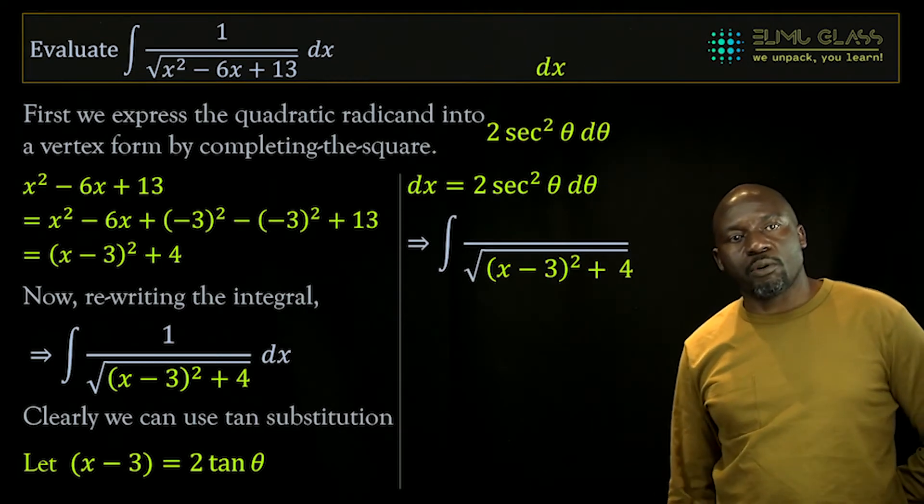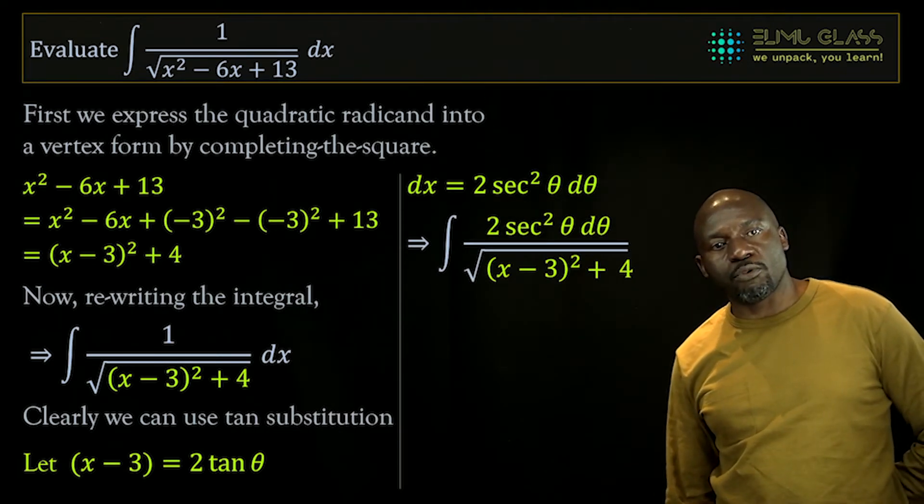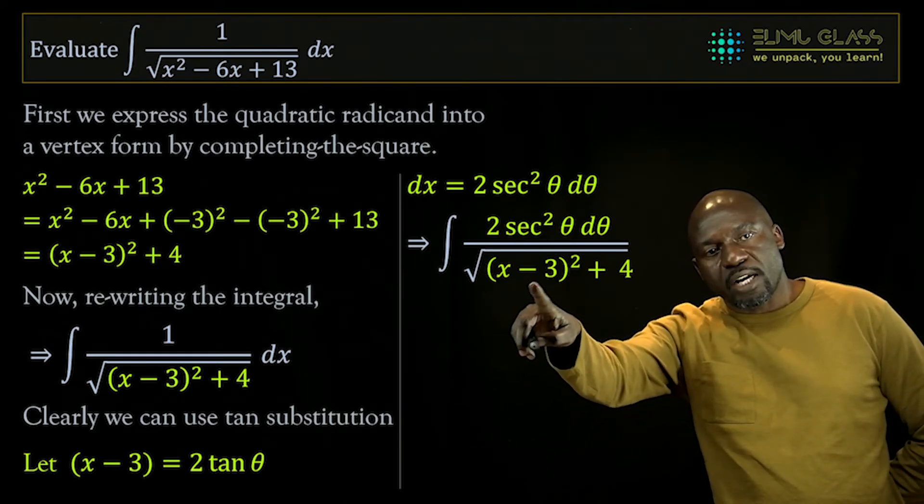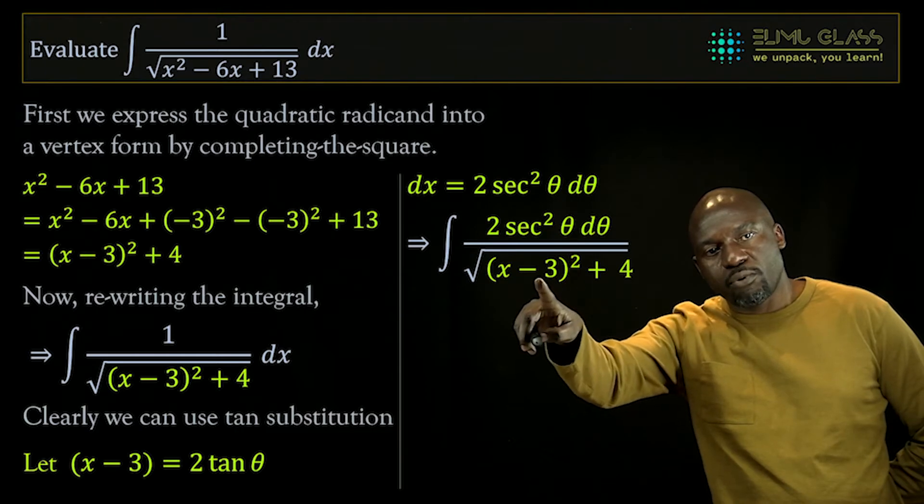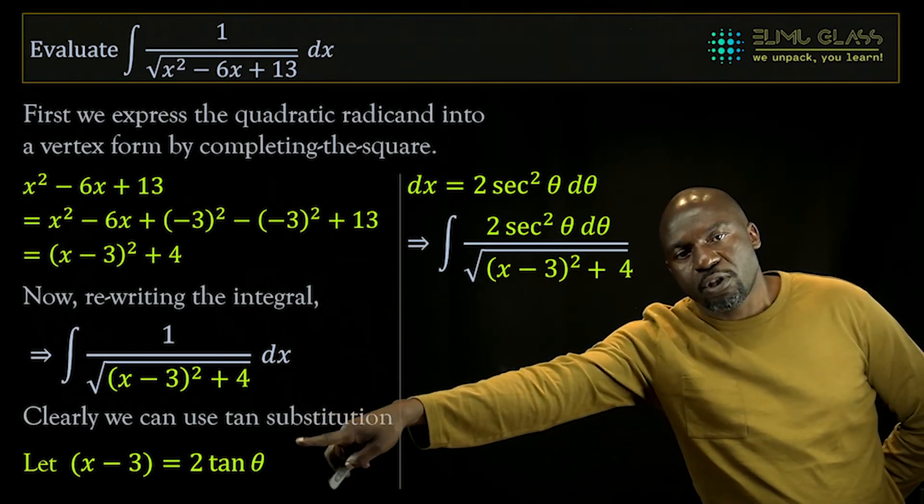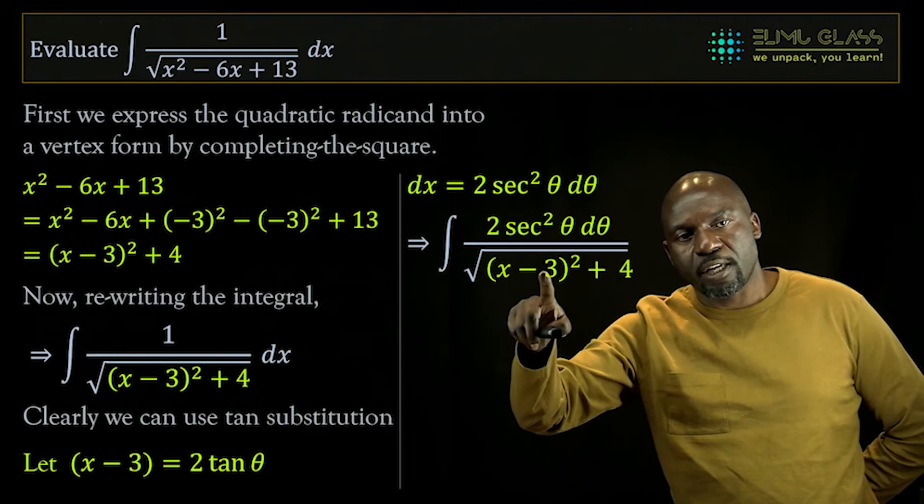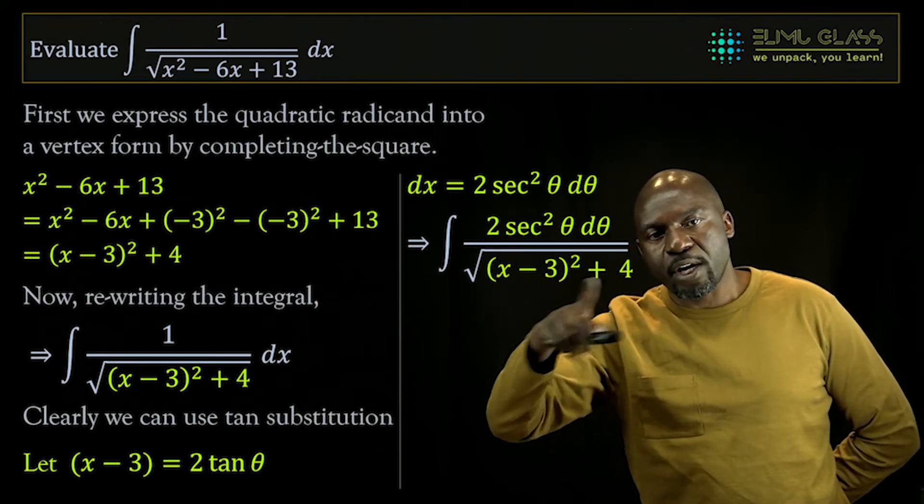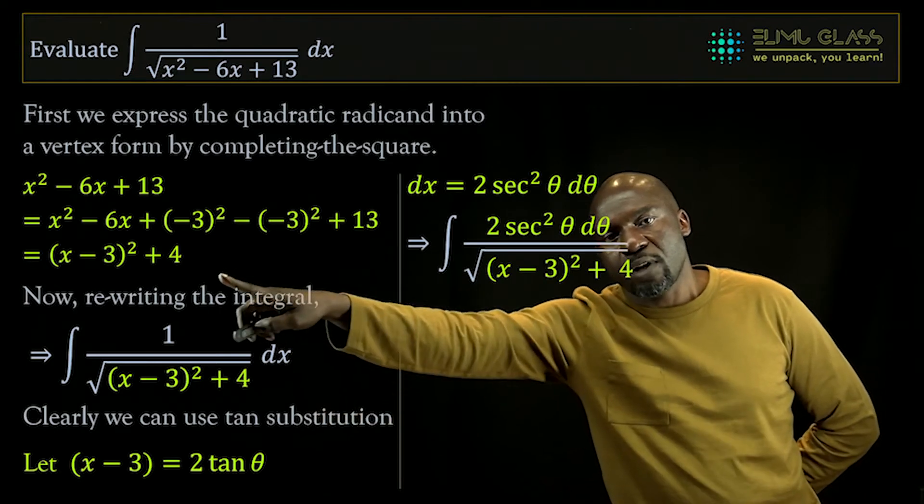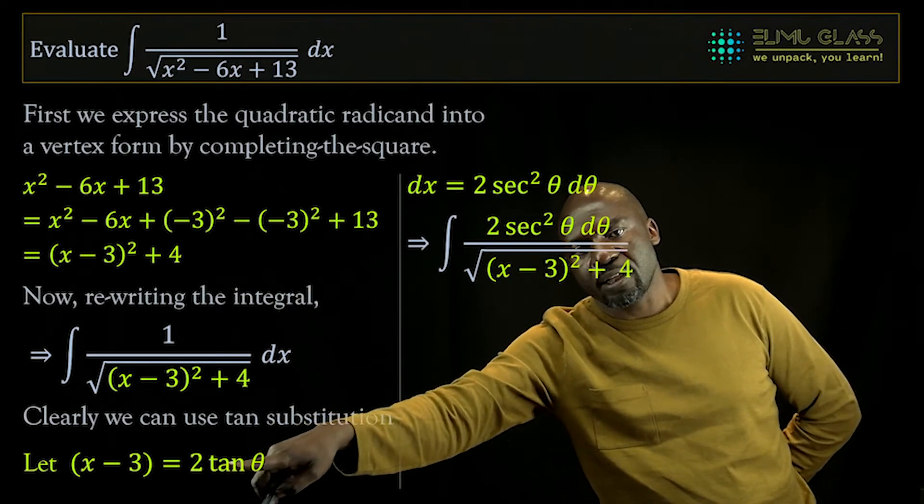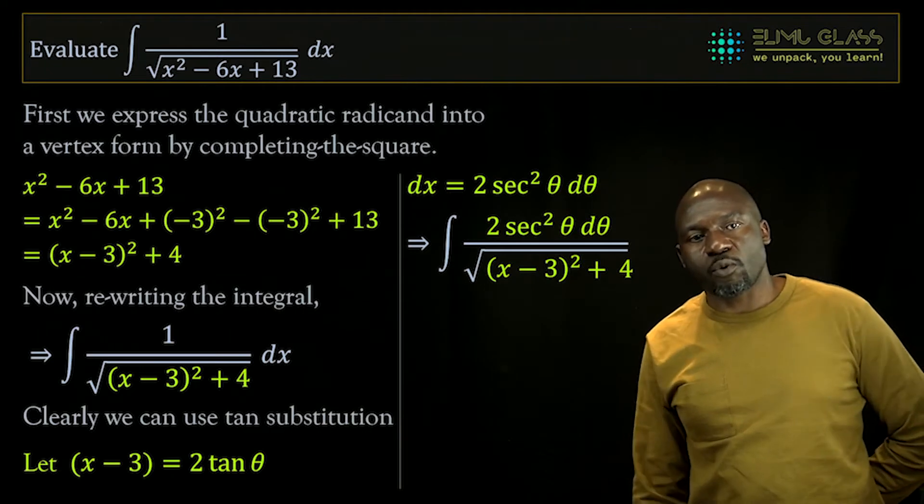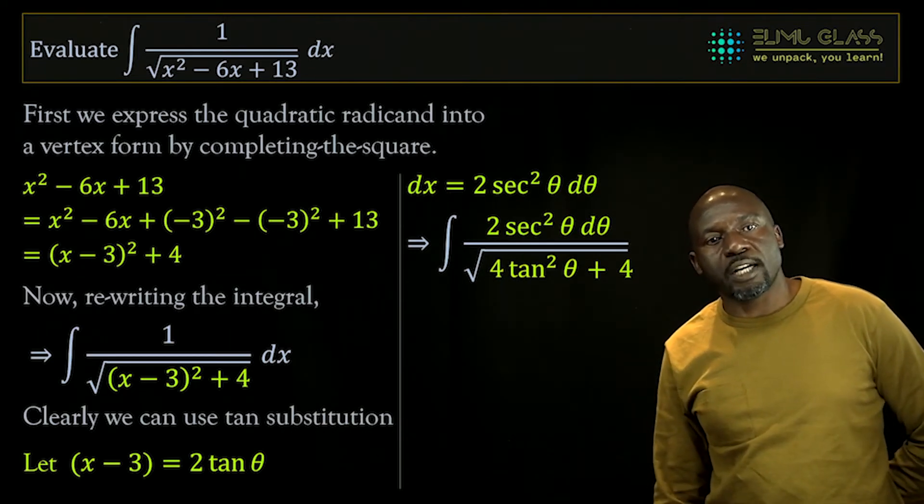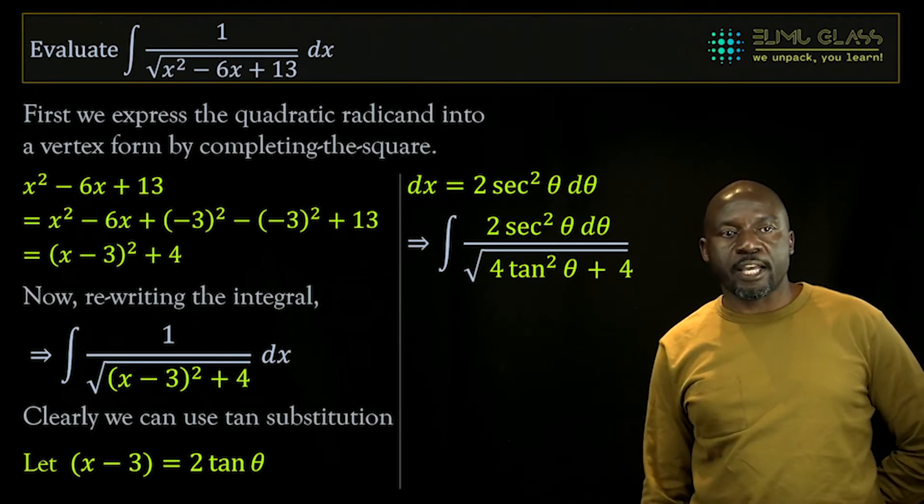So doing that now, we end up with, where there is dx, we remove and put 2 sec squared of theta d theta. Where there is x minus 3 squared, I will put 4 tan squared theta, because this whole expression x minus 3 is 2 tan theta, so if I'm squaring, then I get 4. So I'm going to remove that and replace it with 4 tan squared of theta, and then plus the 4 that was already there.